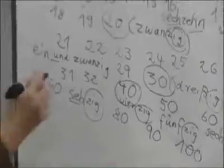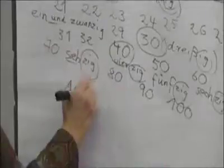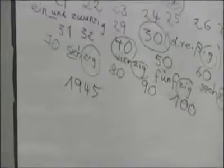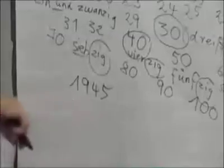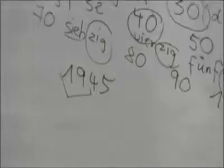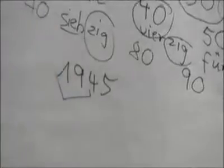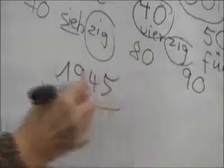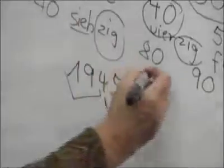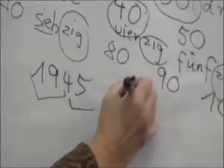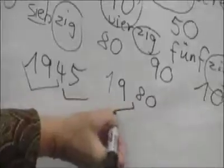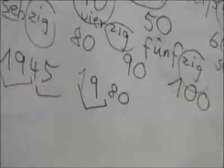Now I'm going to write a year. Let's see 1945, for example. How do we say that in German? In English we say 1945, right? In German we say this. We have to say neunzehnhundert fünfundvierzig. How would we say that? Here again? Neunzehnhundert achtzig. 1980.